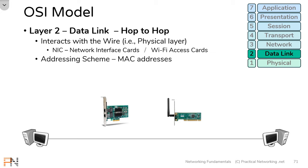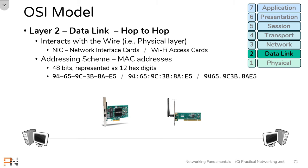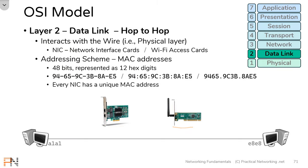To accomplish this goal, Layer 2 is going to use a specific addressing scheme known as a MAC address. MAC addresses are 48 bits, represented as 12 hex digits. Windows machines typically use dashes between the hex digits, Linux machines use colons, and Cisco routers and switches typically use four hex digits with a dot in between. Either way, it's still just 12 hex digits converted into 48 bits. Every single NIC has a unique MAC address, and these MAC addresses are what allow data to go from one NIC to the next — i.e., from one hop to the next.